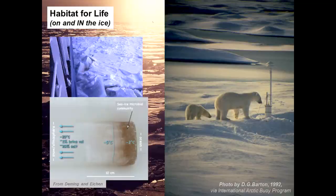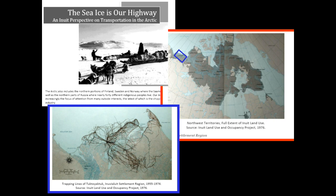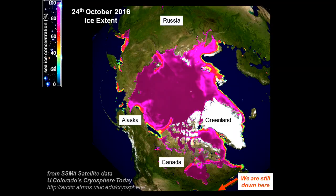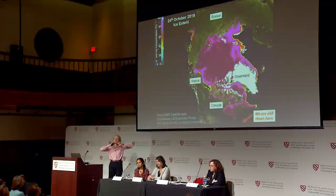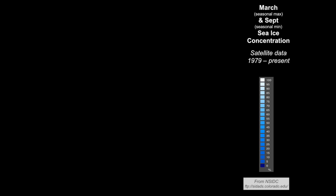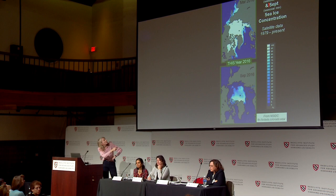Sea ice is also home for people. The Inuit have made their history in the Arctic for 10,000 years. To them, ice is not a hindrance — ice is their highway, their way of getting around. Where are we today? This satellite image shows almost today's sea ice edge, with colors giving ice concentration. The dark areas are water. You can see the sea ice now building up as winter has started in the north, expanding back out to the coasts and down to lower latitudes.